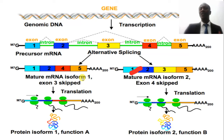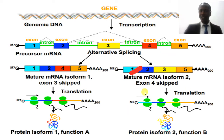We call these isoproteins — proteins that are similar but have a little bit of functional difference in our system. In this other combination, since only exon four is absent, the protein that this one is going to produce through translation is going to be different from the first protein. At the end of the day, the proteins are going to be different.